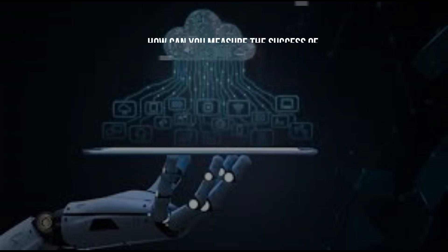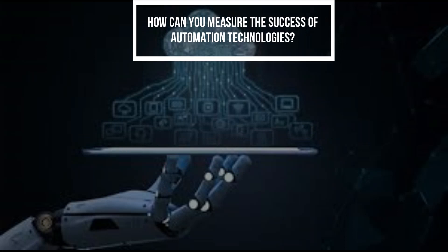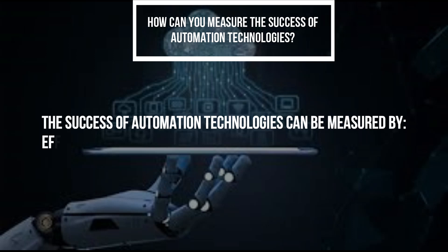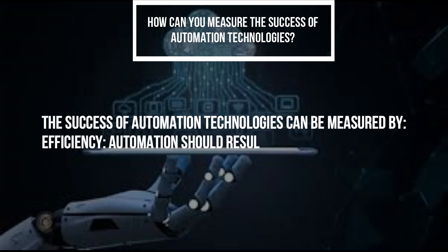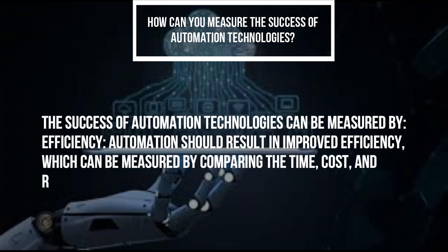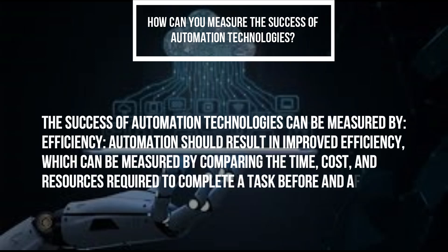How can you measure the success of automation technologies? The success of automation technologies can be measured by efficiency: automation should result in improved efficiency, which can be measured by comparing the time, cost, and resources required to complete a task before and after automation.